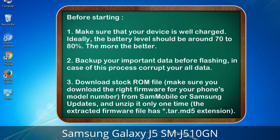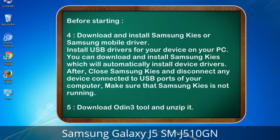3. Download the stock ROM file. Make sure you download the right firmware for your phone's model number. Download it from Sammobile or Samsung Updates, and unzip it only one time. The extracted firmware file has a *.tar.md5 extension. 4. Download and install Samsung Kies or Samsung mobile driver to install USB drivers for your device on your PC. Samsung Kies will automatically install device drivers.